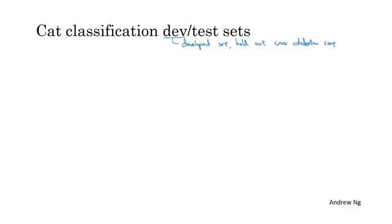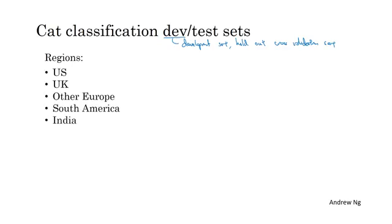Now, let's say by way of example that you're building a cat classifier and you are operating in these regions: in the US, UK, other European countries, South America, India, China, other Asian countries, and Australia. So how do you set up your dev set and your test set?